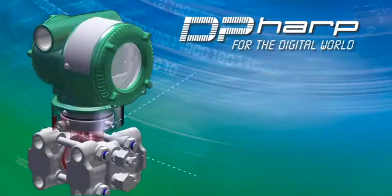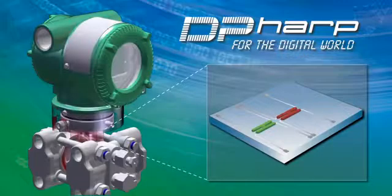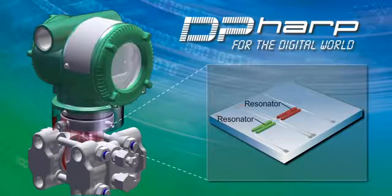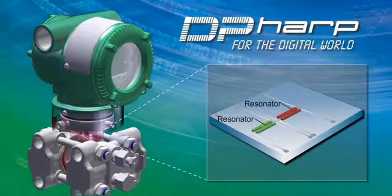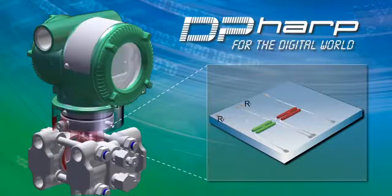At the heart of the transmitter lies the DP-HARP sensor, which incorporates two resonators that offer digital precision to provide higher performance over traditional analog sensor types.